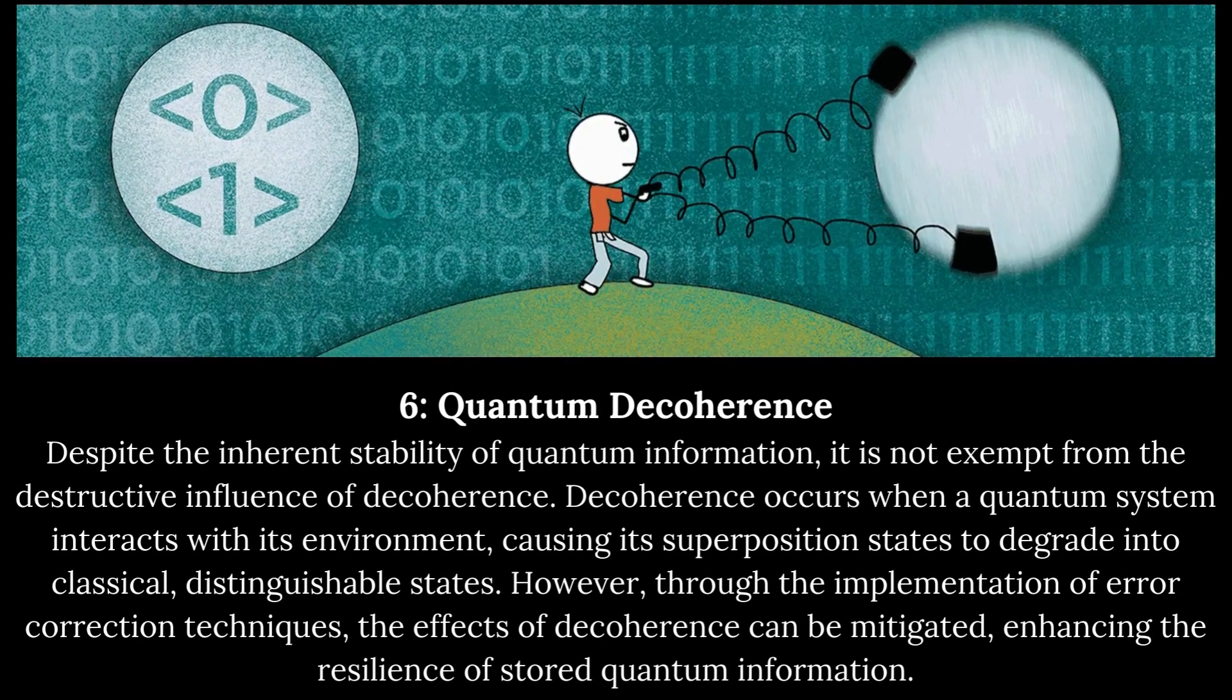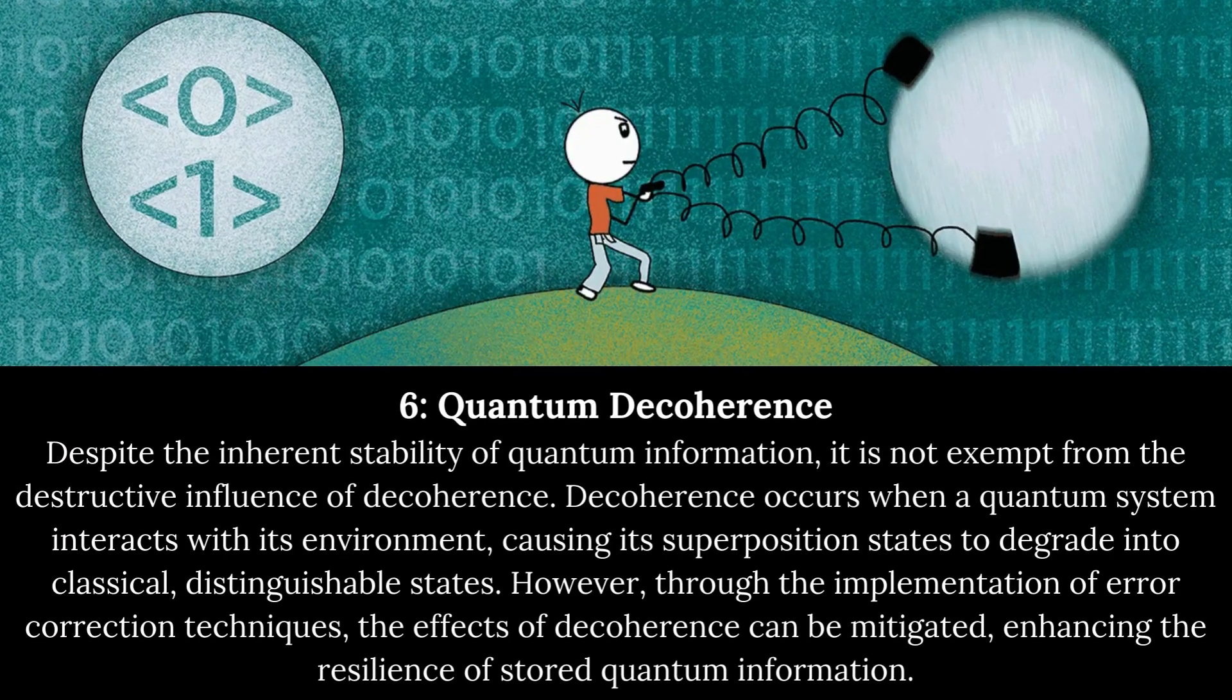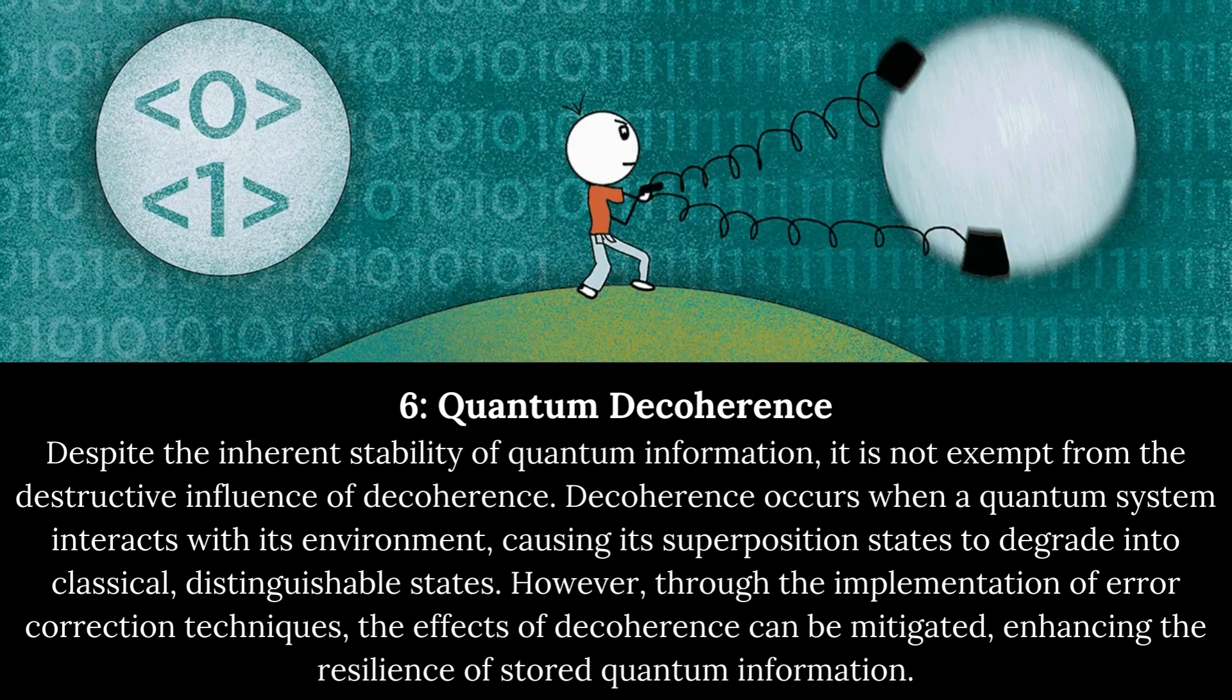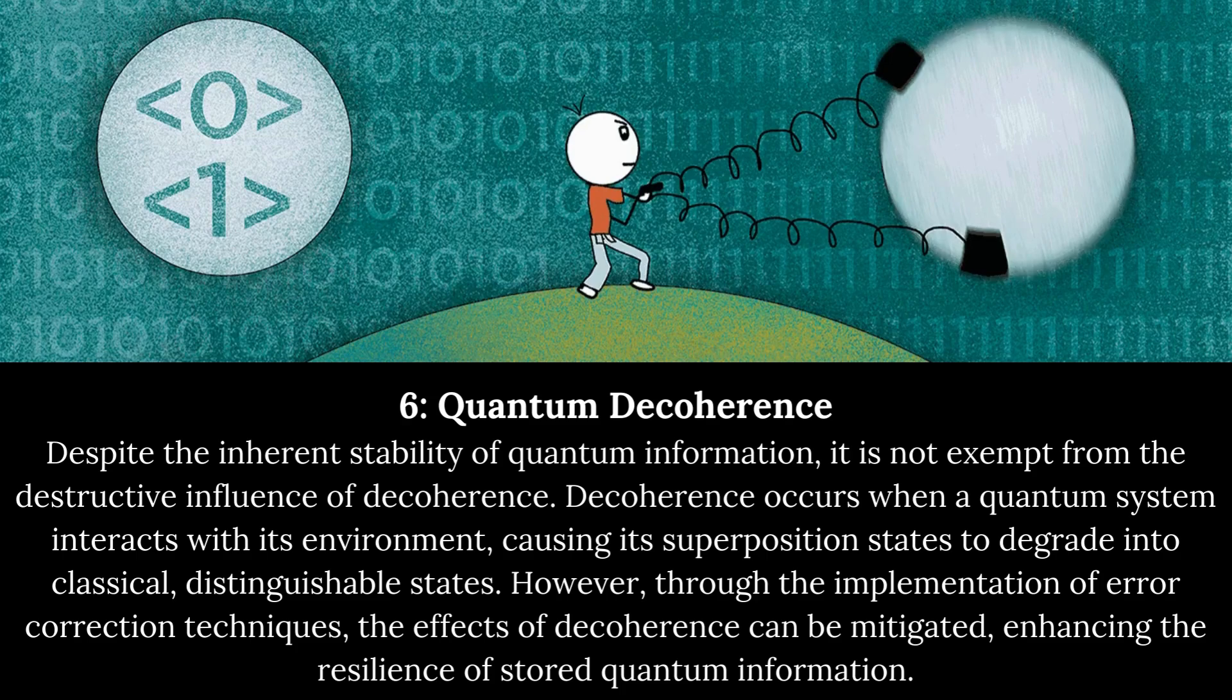Quantum Decoherence. Despite the inherent stability of quantum information, it is not exempt from the destructive influence of decoherence. Decoherence occurs when a quantum system interacts with its environment, causing its superposition states to degrade into classical, distinguishable states. However, through the implementation of error correction techniques, the effects of decoherence can be mitigated, enhancing the resilience of stored quantum information.